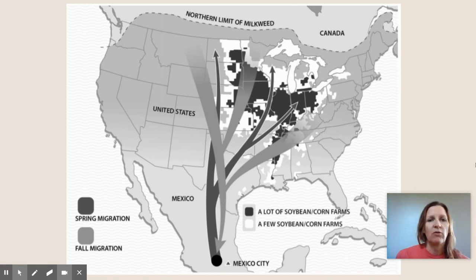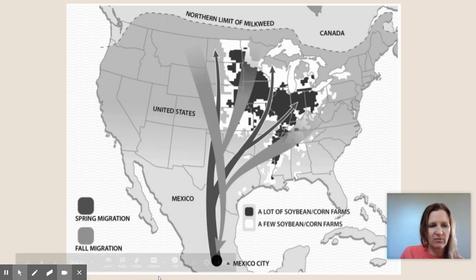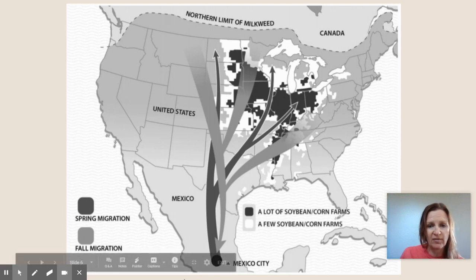This short video will walk you through how to read and interpret this graphic. It's going to be really important that we look at the key. We can see that the dark area is showing spring migration patterns, and the gray area will show fall migration patterns of monarch butterflies.